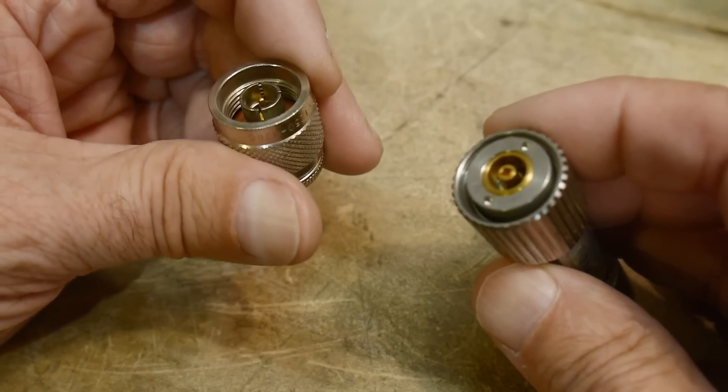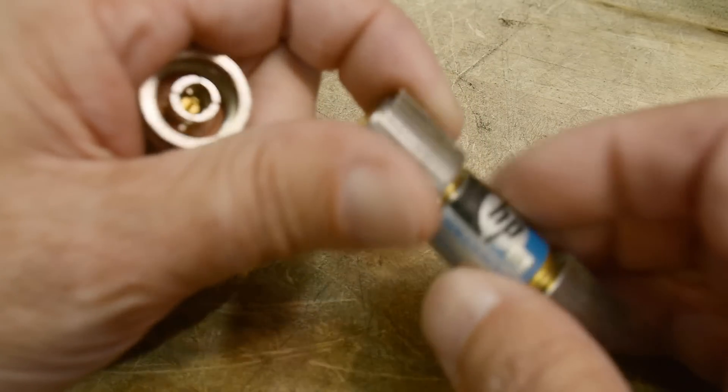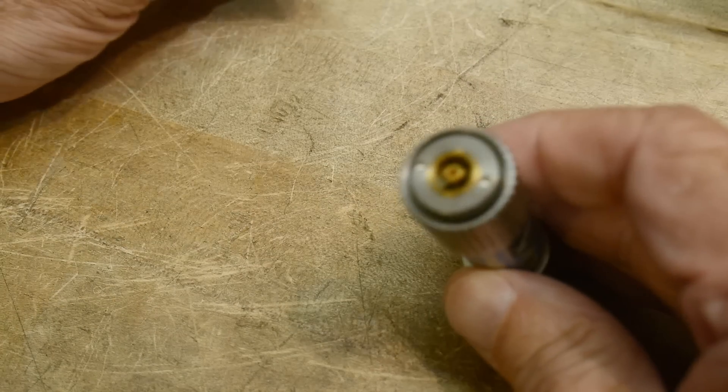So these are called APC7s, APC-7, or just 7mm connectors. We used to just call them 7mm connectors.